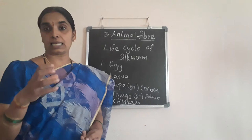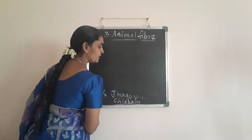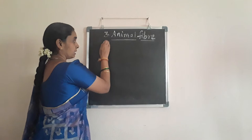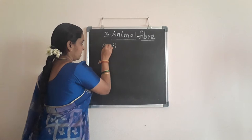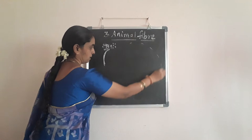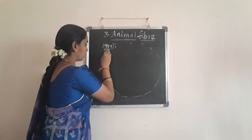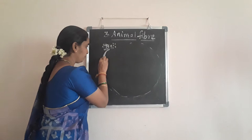The silkworm gives the silk — they lay eggs. In the life cycle of silkworm, the first stage is the egg stage. This drawing is very important — my life cycle of silkworm. The next stage is the larval stage. See carefully; this is the larval stage I am drawing on the board.